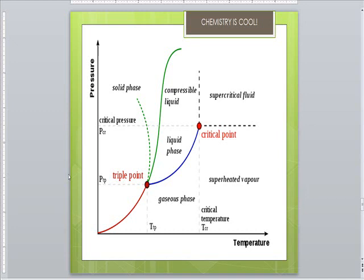Vapor pressure is the pressure caused by escaped vapor molecules in a sealed container. Attractions between molecules keep molecules from escaping — those hydrogen bonds again. In a solution, some of the solvent is busy keeping the solute dissolved, so fewer molecules escape, lowering the vapor pressure. The lower vapor pressure equals a higher boiling point — so salt water boils above 100°C at sea level. Freezing point depression occurs because solute molecules break up the orderly pattern molecules need to form a solid, making the freezing point lower.